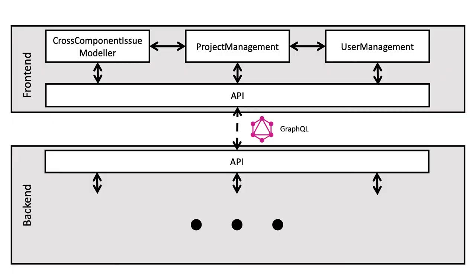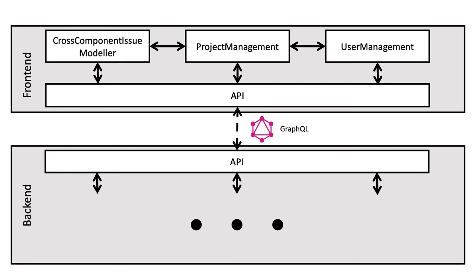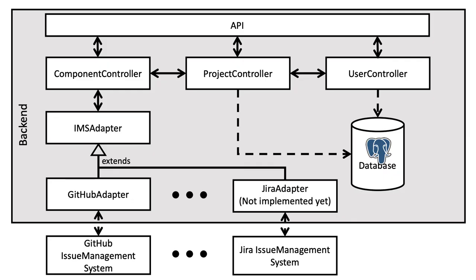Let us take a quick look into the architecture of Gropius. Apart from user and project management functionality, the essential part is the cross-component issue modeler, which implements our graphical language to model cross-component issues. The frontend communicates via GraphQL with the backend. In the backend, there are controllers for managing user, project and component data. The tool uses a PostgreSQL database to store the necessary information about the users, projects and components. Gropius acts as a wrapper across conventional issue management systems. There is an abstract issue management system adapter, which offers a uniform interface to manage issues. Adapters for the specific issue management systems extend the abstract issue management system adapter to allow Gropius propagating the operations on the issues to the underlying issue management systems.